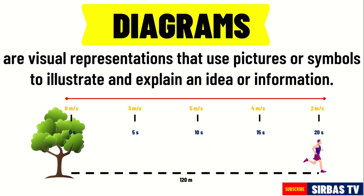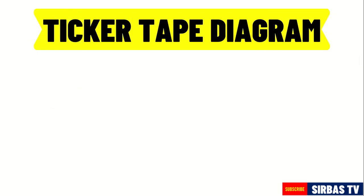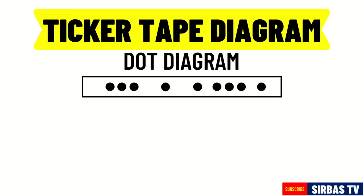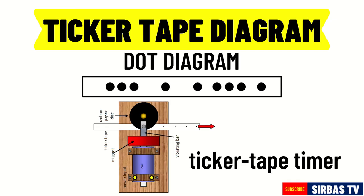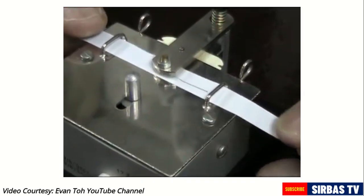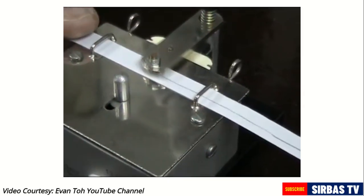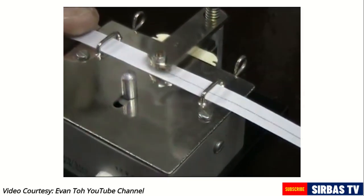A common diagram that is used to represent motion is a ticker tape diagram, which is sometimes called a dot diagram. A ticker tape diagram is produced using a ticker tape timer. A ticker tape is a long strip of paper that is passed through a printing device and is attached to a moving object.